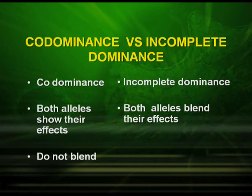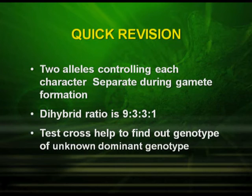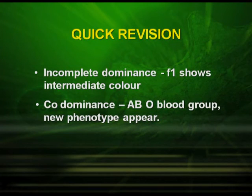After studying all these, let us summarize the differences between co-dominance and incomplete dominance. In co-dominance, both alleles show their effects. In incomplete dominance, both alleles blend their effects. In co-dominance, there is no blending of effects. Quick revision: two alleles controlling each character separate during gamete formation. The dihybrid ratio is 9:3:3:1. The test cross helps to find out the genotype of an unknown dominant phenotype. Incomplete dominance in F1 shows intermediate color. In co-dominance, as in ABO blood groups, a new phenotype appears.